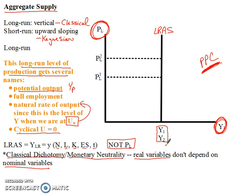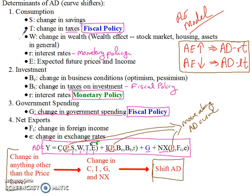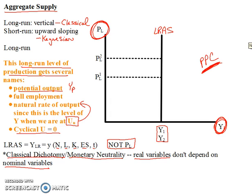The way we think about any curve is: first, we look at changes in prices that move us along it, and then we look at determinants that shift it. We did this on the aggregate demand side. Now we're doing the same thing on the supply side. For the long-run aggregate supply curve, changes in prices don't affect real GDP — so we don't really move along it in a meaningful way. The next step, of course, is going to be shifting that long-run aggregate supply curve, and we'll talk about that on our next podcast.